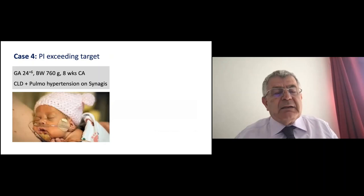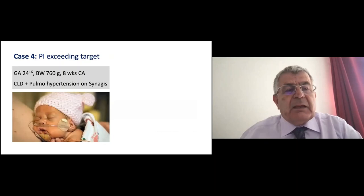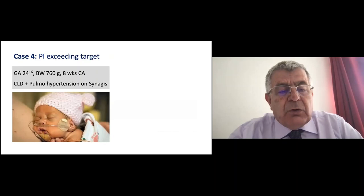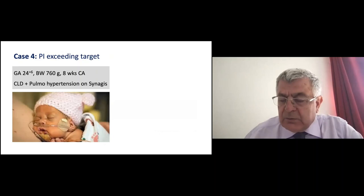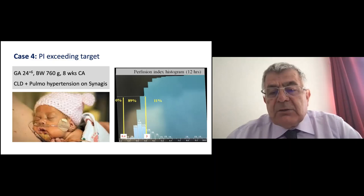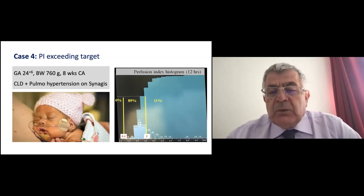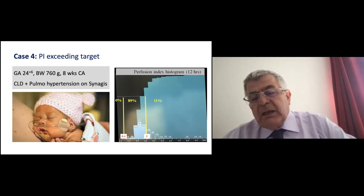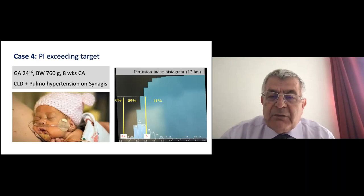Another interesting case: a 24-week, 760-gram baby near discharge who had chronic lung disease, confirmed pulmonary hypertension, and was treated with sildenafil. After starting sildenafil — a vasodilator — the pulsatility index showed 11% above target. This raises the question of whether sildenafil is vasodilating the pulmonary vessels as much as the peripheral vessels. It's a relevant finding, and when we give sildenafil, we should try to learn by looking at the PI index histogram.